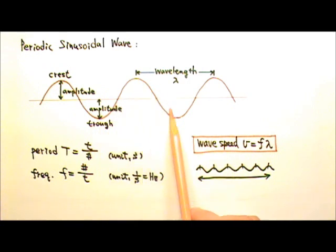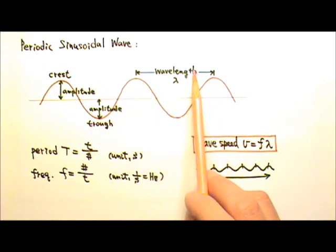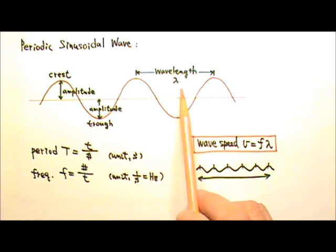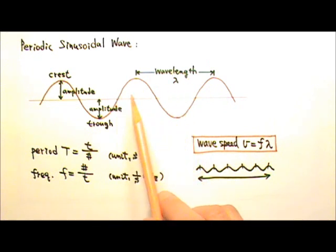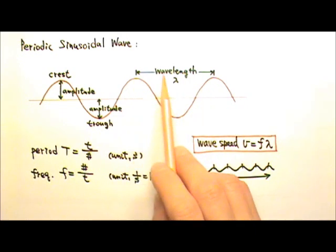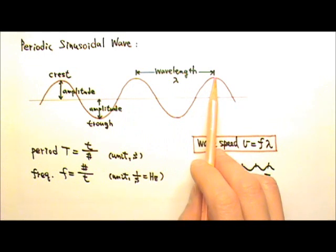The length of one complete wave is called a wavelength, and we use Greek letter lambda for it. One wavelength can be from here to here or here to here. Basically, the distance between two adjacent wave crests is a wavelength.